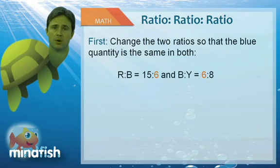So the first thing we need to do is change the two ratios so that the same quantity, or the blue quantity, is the same in both. So we do that by changing the 2 and the 3 to be both 6. And this is just like changing a fraction. If we multiply the 2 by 3, we need to multiply the 5 by 3 to have 15 to 6. And if we multiply the 3 by 2, we need to multiply the 4 by 2 to get 6 to 8.